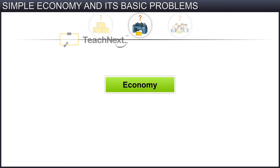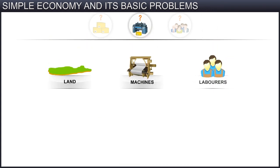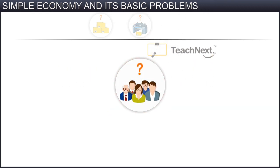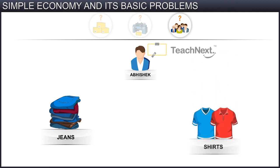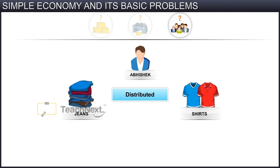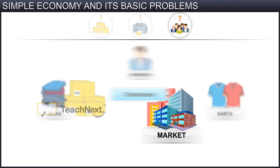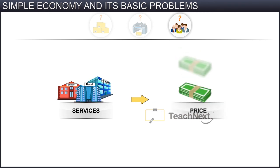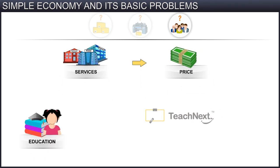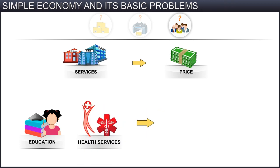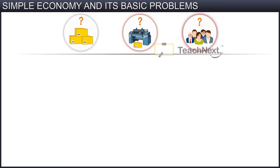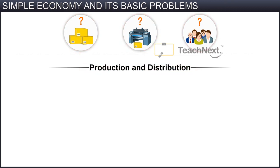Similarly, the economy also faces the problem of how much of each resource it possesses should be used in the production of different commodities. Moving ahead, we will now see the third basic economic problem: for whom to produce these goods. In the above case, Abhishek has produced both jeans and shirts. These products should be distributed or sold in the market. The problem of how to distribute goods and to whom they should be distributed also arises. Some services will be distributed for a price, while others, such as elementary education, health services, and so forth, are distributed for free by the government. So, most basic economic problems are related to the production and distribution of goods and services.